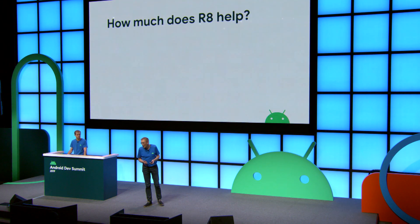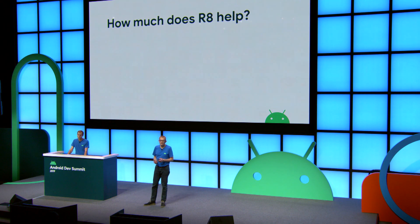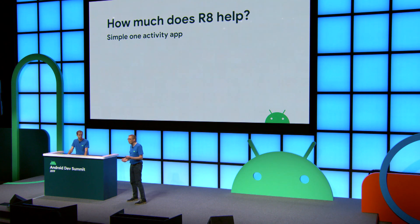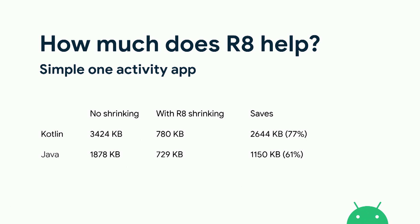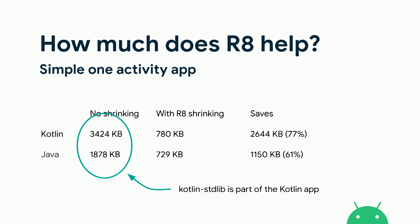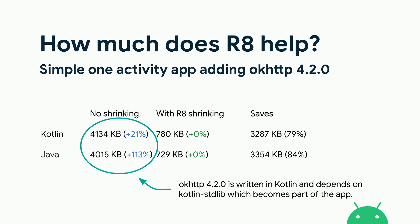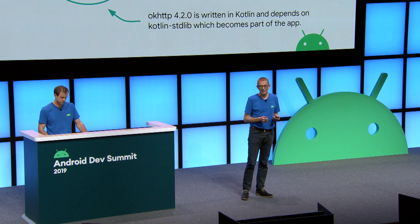Now that R8 has been turned on, how much can you expect to reduce the size of your application? I created a simple one-activity app built in two versions — one using Kotlin and one using Java. Both versions use the Jetpack libraries but no other libraries. Before shrinking, the Kotlin app is considerably larger than the Java app, mainly because the Kotlin standard library is part of the Kotlin app but not the Java app. However, after shrinking, the two apps are at a comparable and much smaller size. Adding the OKHttp 4.2 library, the Java version doubles in size, whereas the Kotlin app only grows by 21%, because OKHttp 4.2 is written in Kotlin — so the Java app gets the Kotlin standard library as a transitive dependency.